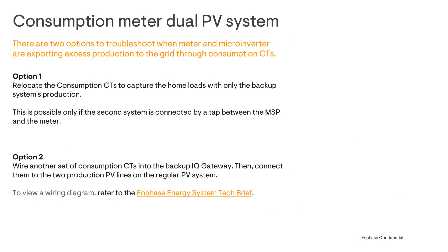The first option is to relocate the secondary system's production CT, only if it is connected by a tap between the main service panel and the meter. The second option is to wire another set of consumption CTs into the secondary IQ gateway and connect them to the two production PV lines on the primary PV system. Check out the wiring diagram by clicking the link in the Planning and Enphase Energy System Tech Brief. A link to the document is in the video description below.